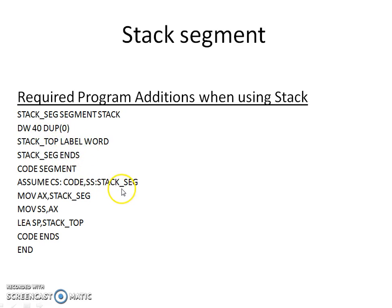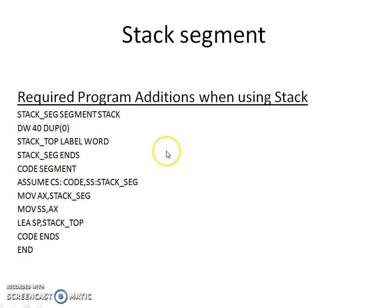In the code segment, you are initializing the SS register — the stack segment base register — with the address of the stack segment, and you are loading the address of the stack top into the stack pointer register SP. This part of the code is required to initialize the stack segment base register SS as well as the stack pointer register SP. SS and SP are used together to access the stack.